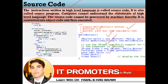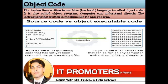Dear students, you have to understand this definition carefully — it is a very important topic. Object code is a type of code in which instructions are written in machine language, that is, in low-level language. The computer can directly and easily understand object code.